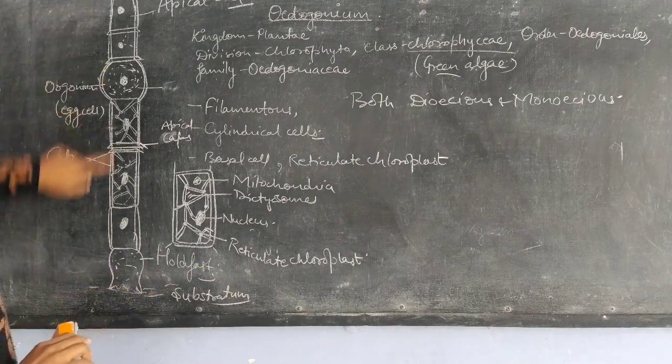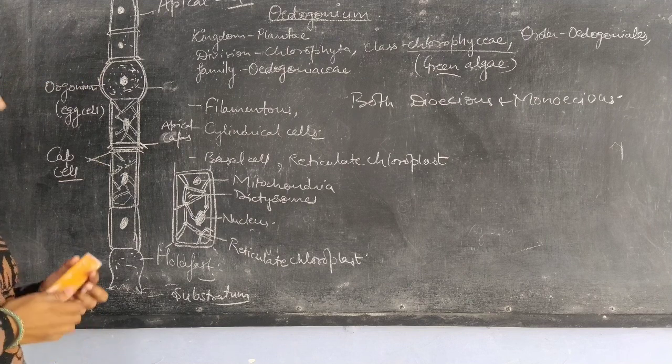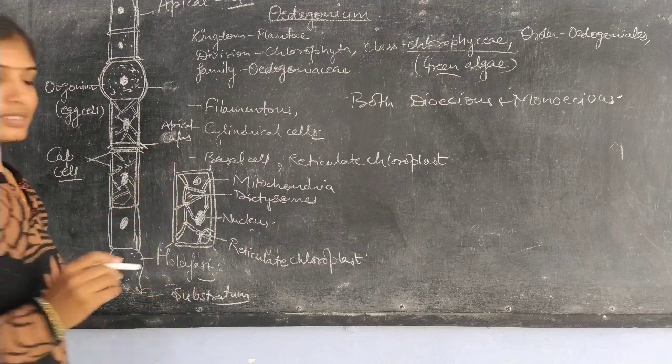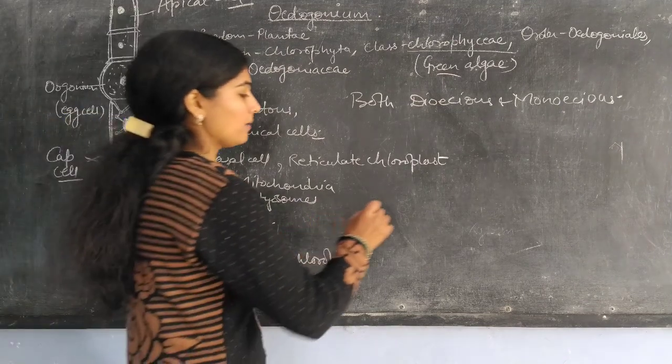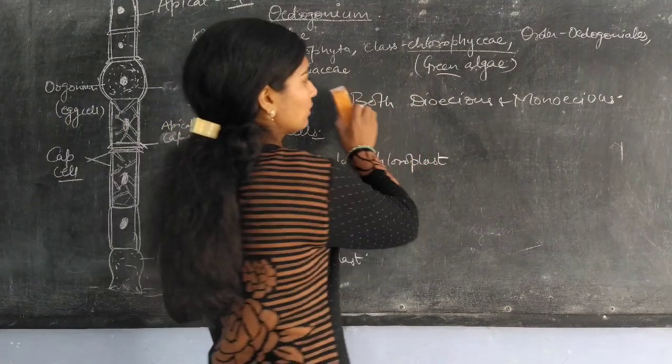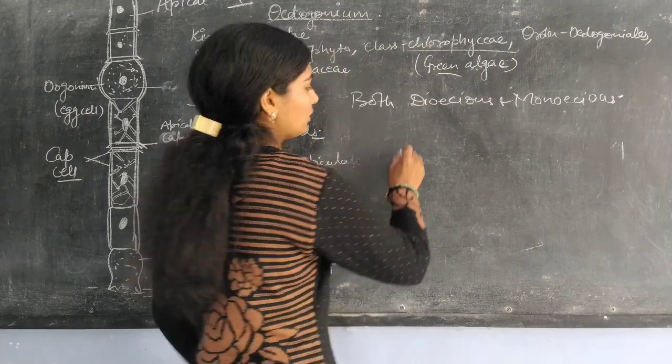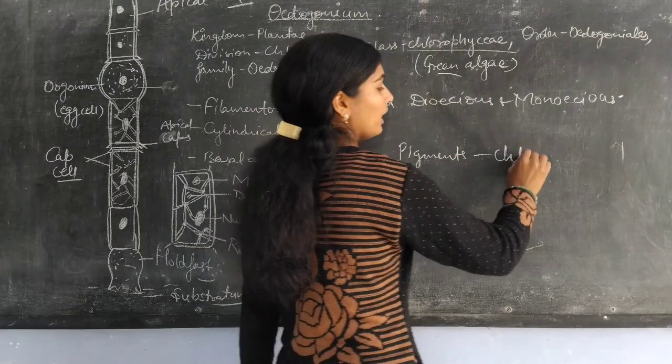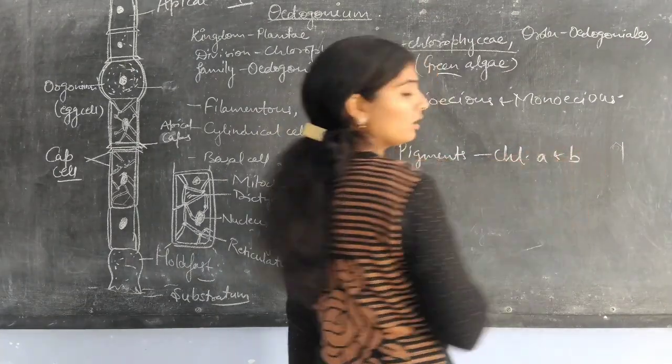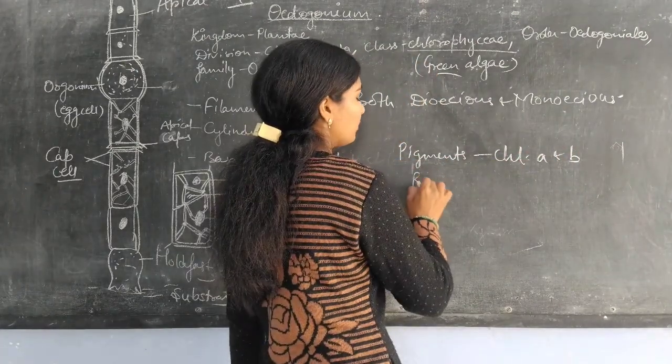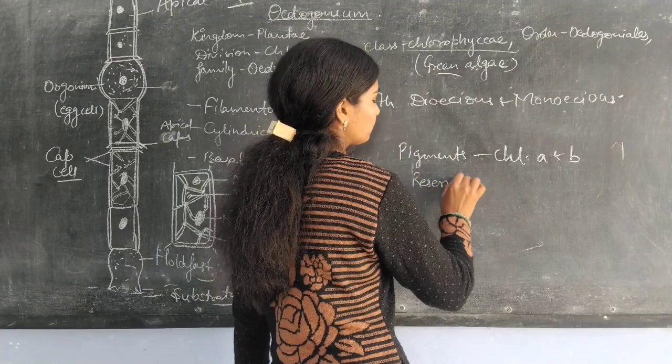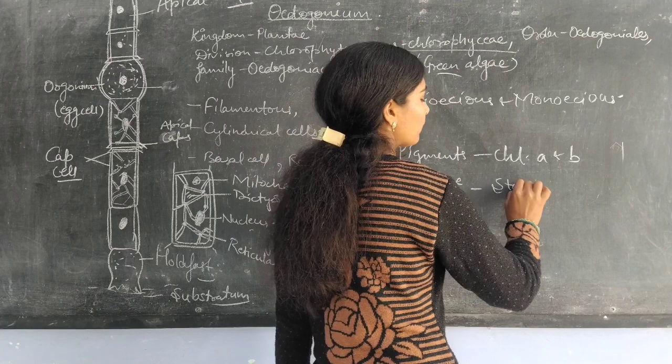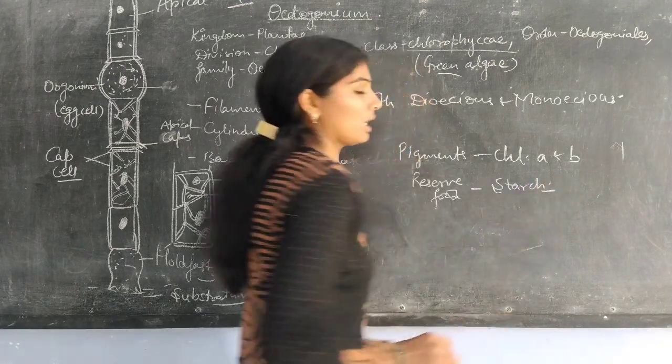So this is about the vegetative structure of Oedogonium. Now it is a green algae, so it has pigments. The pigments are chlorophyll A and chlorophyll B, and the preserved food material is in the form of starch.